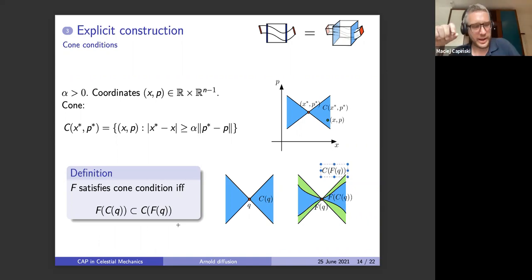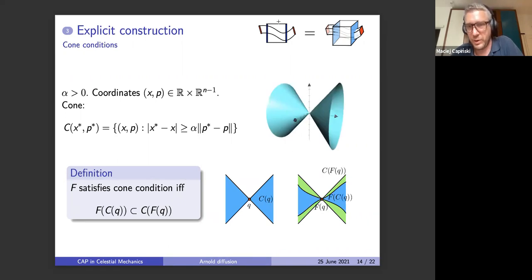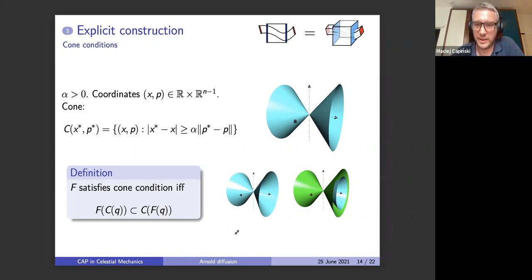This is a nice result because it aligns the dynamics — we have a cone field. In three dimensions, this would be a three-dimensional cone attached at the origin: the cone condition means this cone gets mapped to the cone attached at f(q). So the cone fields are mapped one into the other.